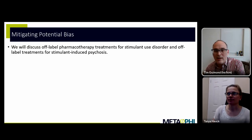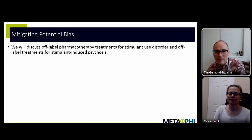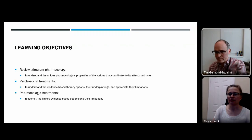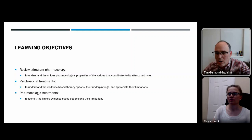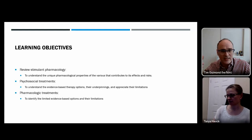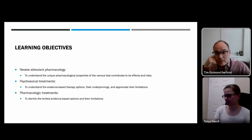To mitigate bias, we will be discussing off-label pharmacotherapy treatments for stimulant use disorder and off-label treatments for stimulant-induced psychosis — both of which have no approved indications. We will use generic names. Our learning objectives for the next 40–45 minutes: review stimulant pharmacology to understand the pharmacological properties of various stimulant drugs of abuse, their effects, risks, and implications for management; then review psychosocial treatments and the evidence for the strongest among them.